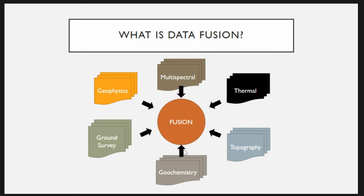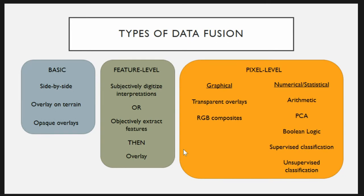I just want to give a brief overview of what we're talking about when I say data fusion — what most people would call data integration, a more commonly used term. It's simply taking various types of remote sensing data and GIS data and putting them together. We have geophysical data, multispectral data from satellite sensors and aerial platforms, thermal data, topographic data from LiDAR and photogrammetry, ground survey data, archaeological survey data, and geochemistry.